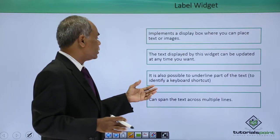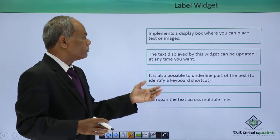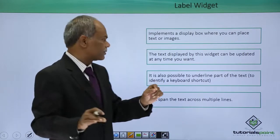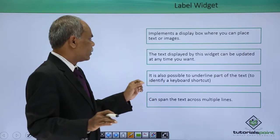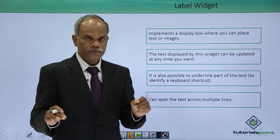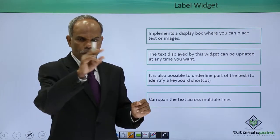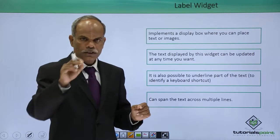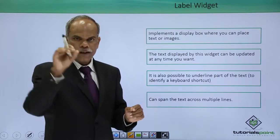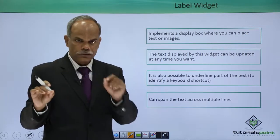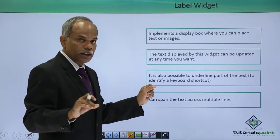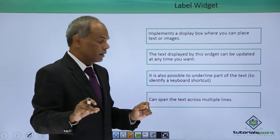It is also possible to underline part of the text to identify the keyboard shortcut. Normally you see the File menu — the F is having an underline. Such an effect can be done or given to the label.